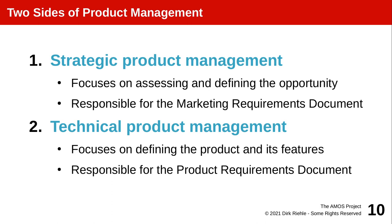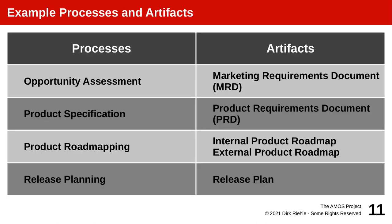Scrum has no notion of a strategic product manager — only the technical product manager, essentially the product owner. There is a lot to learn if you want to be a product manager: high-level strategic things like assessing a market opportunity, and the technical details of writing a product specification, communicating internal and external product roadmaps, and so forth. It's a comprehensive, quite challenging job that requires experience to be done right.